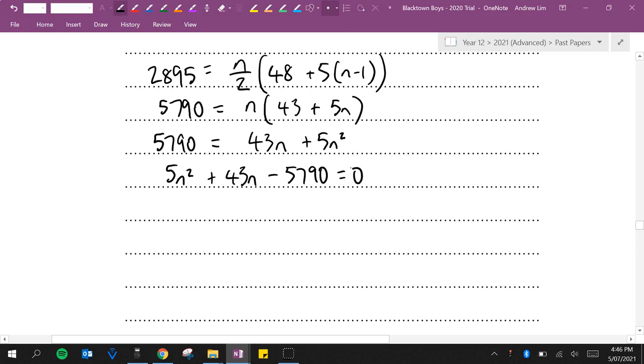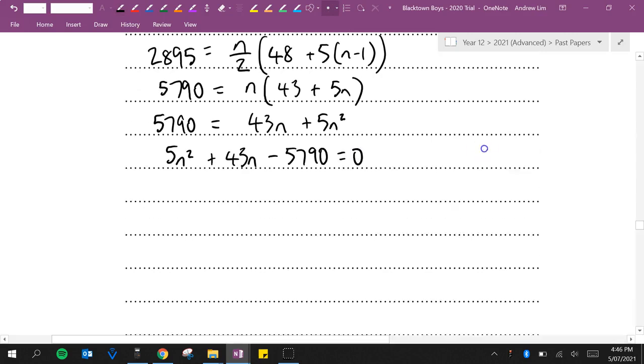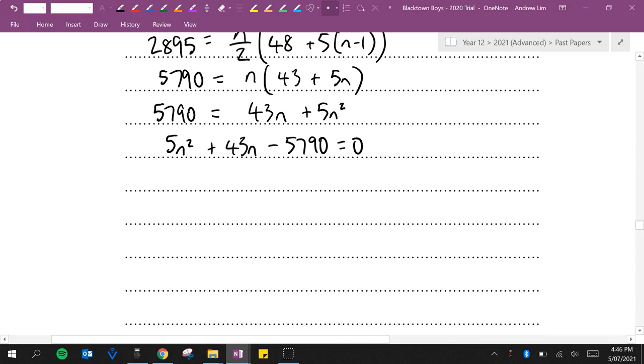And now I'm just going to use the quadratic formula to see what that gives me, because I just can't be bothered trying to factorize this. So N is equal to minus B plus or minus the square root of B squared minus 4AC all over 2A.